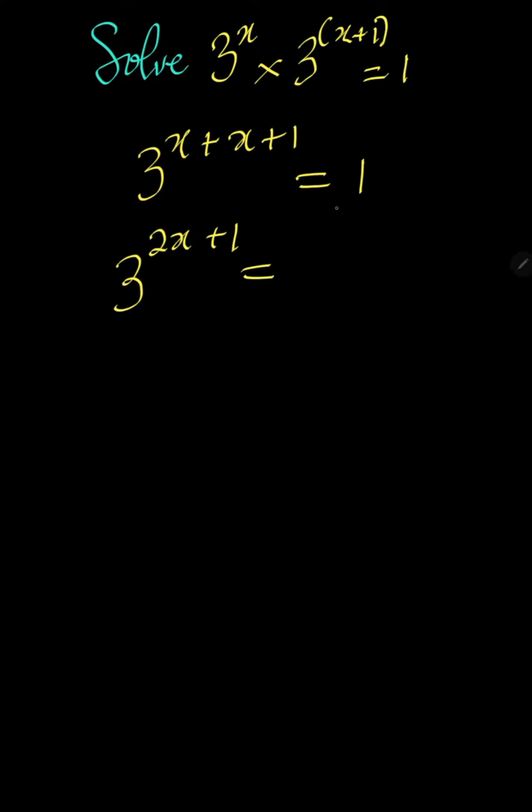But 1 can be written as 3 to the power of 0 because any number raised to the power of 0 is the same thing as 1 from the laws of indices. The essence of doing this is to ensure that both of them have the same basis. Therefore, you can equate their powers.